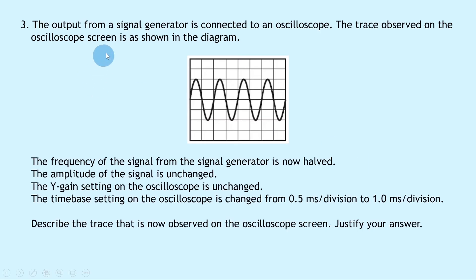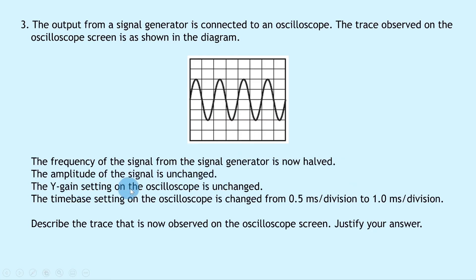Question three says the output from a signal generator is connected to an oscilloscope. The trace shows four waves on the screen. The frequency of the signal is now halved, the amplitude is unchanged, and the Y-gain setting is also unchanged. The time base setting is changed from 0.5 milliseconds per division to 1.0 milliseconds per division. We need to describe the trace now observed and justify the answer.